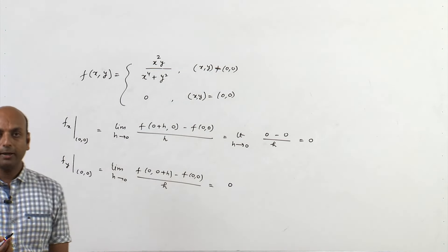So, existence of partial derivatives at a point does not guarantee that the function is continuous at that point for several variable functions. The additional condition required is that the partial derivatives fₓ and f_y must exist and be continuous throughout a disk centered at (a, b) — then we can conclude the function is continuous at that point. Thank you very much.